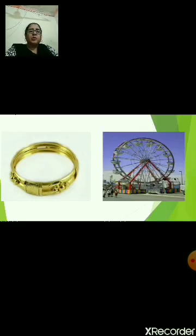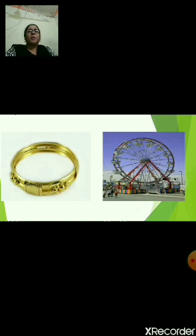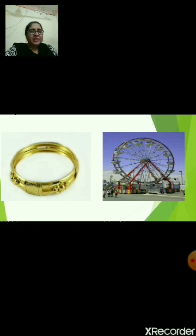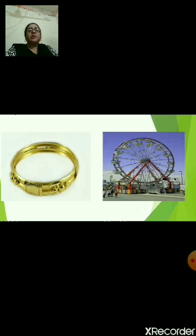Now, in the first picture what you see? It is the picture of a bangle. What is the shape of a bangle? Again, it is a round shape. What do you see in the second picture? You see this in a fair — it is called a giant wheel. What similarity do you see in both the pictures? Both shapes are again round in shape, circular in shape. So, today we are going to learn about circle.